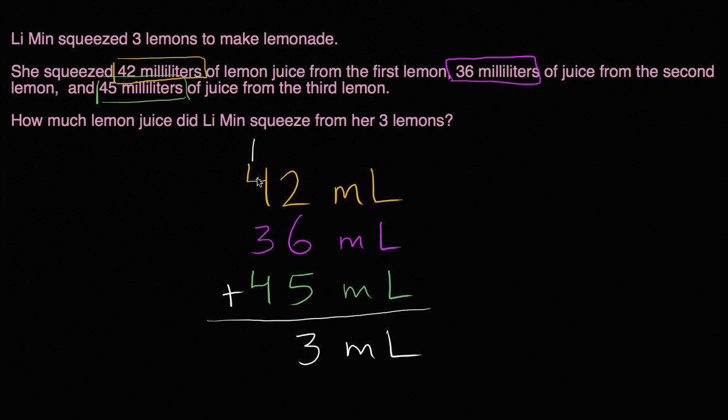So one plus four is five, plus three is eight, plus four is 12. So it's going to be 12 tens, which is the same thing as 120. So in total, Li Min squeezed 123 milliliters from her three lemons.